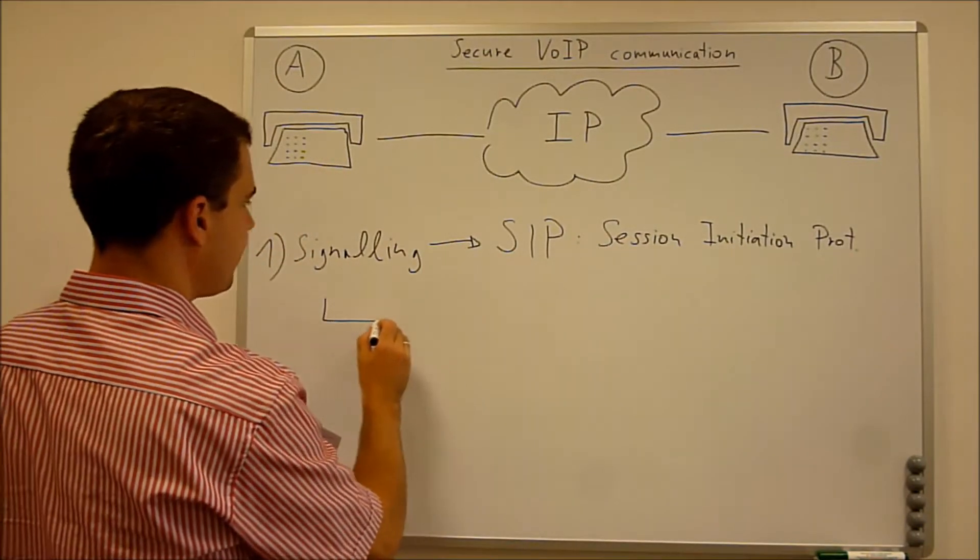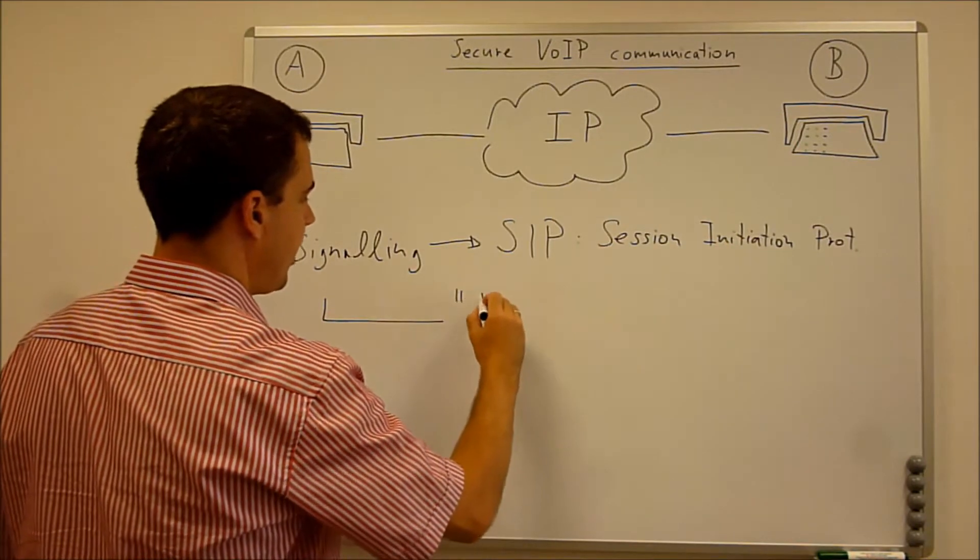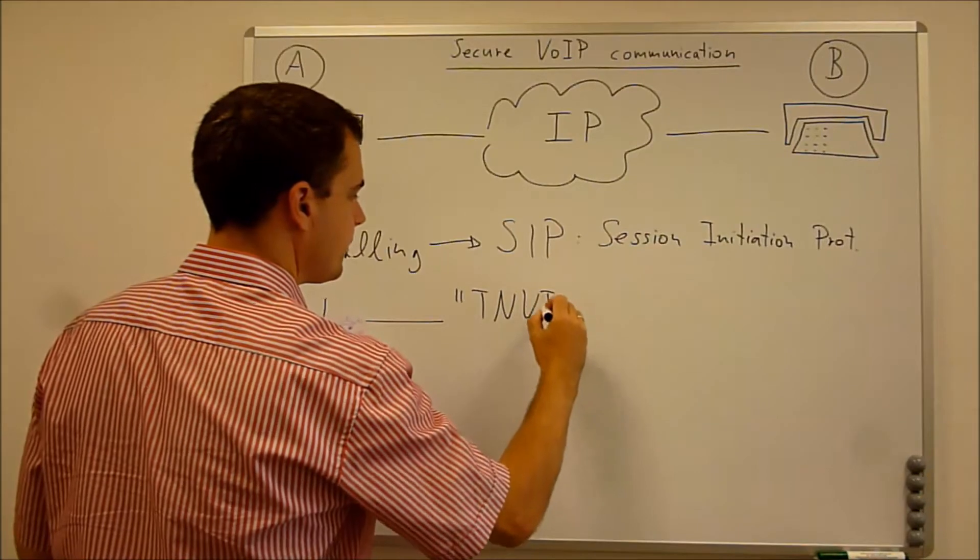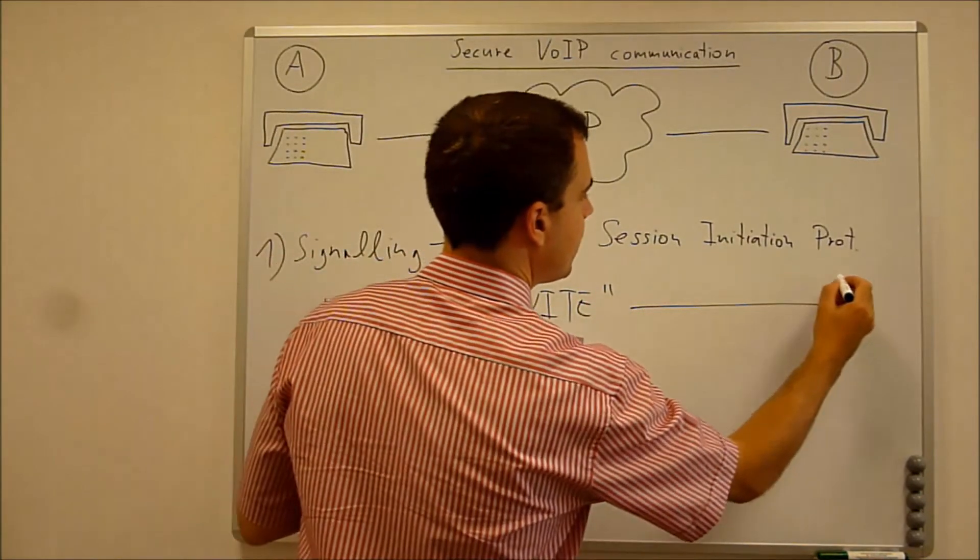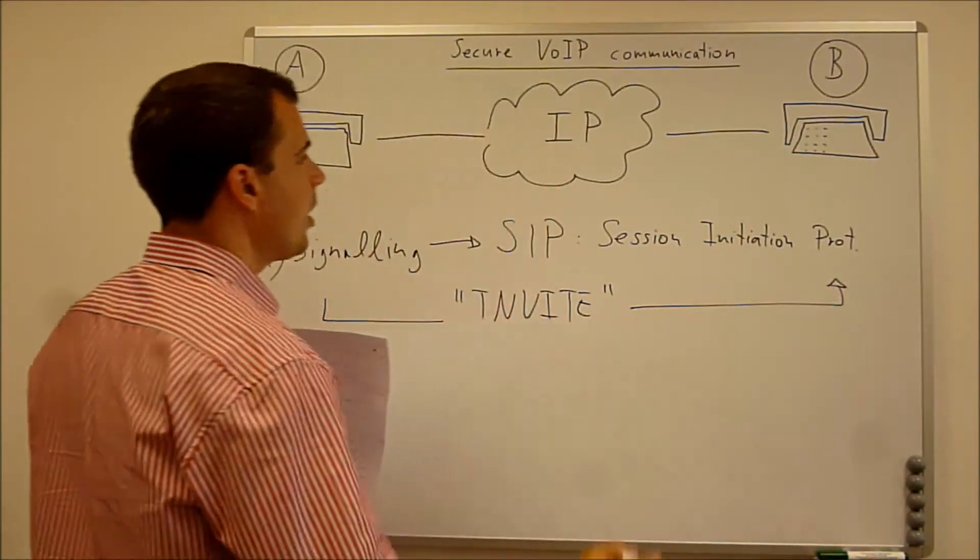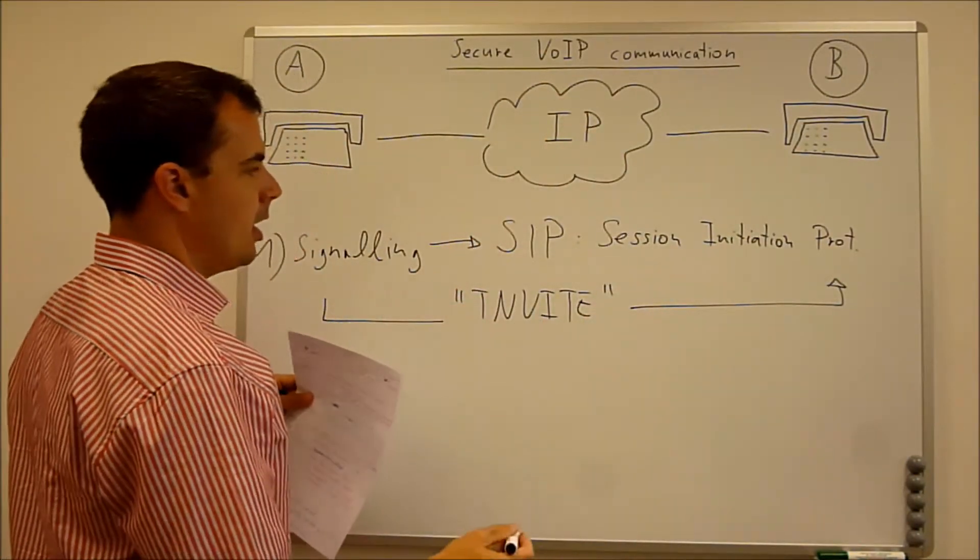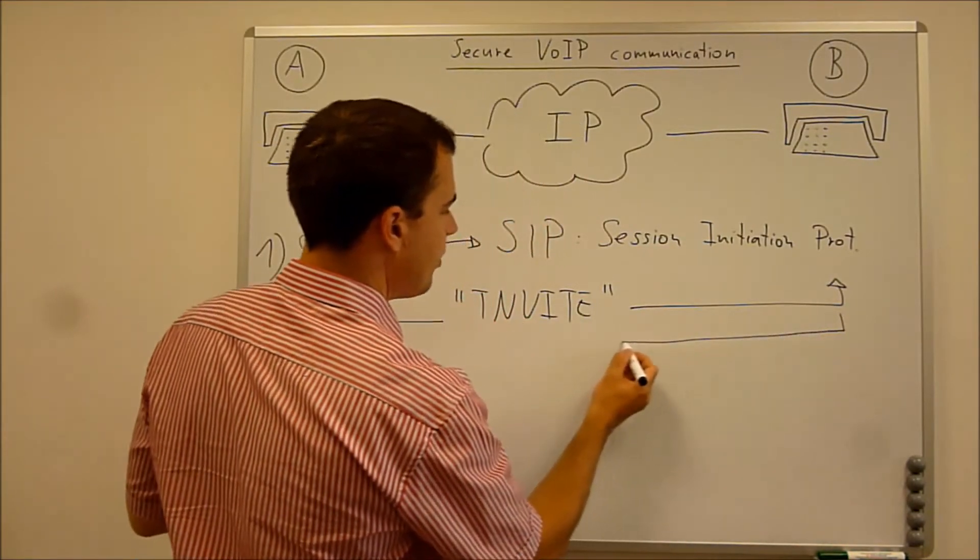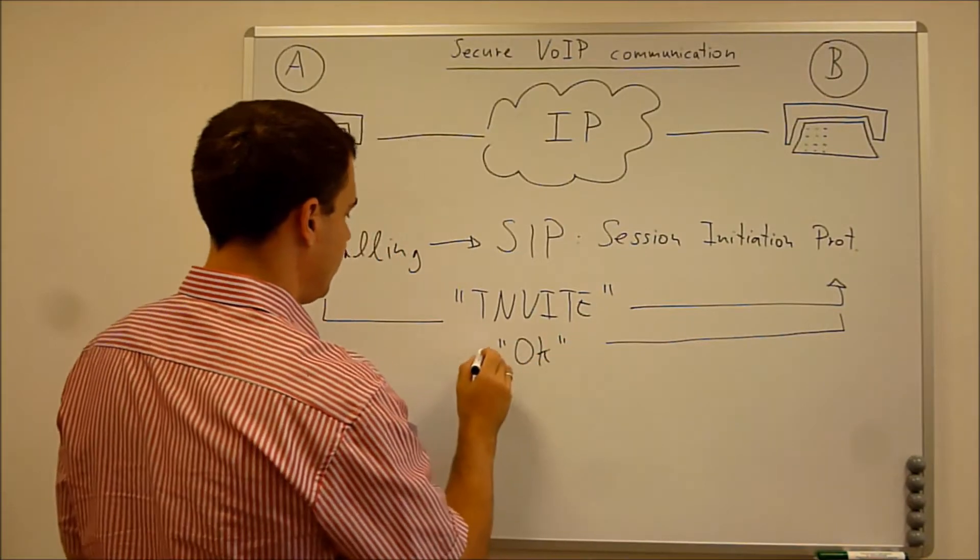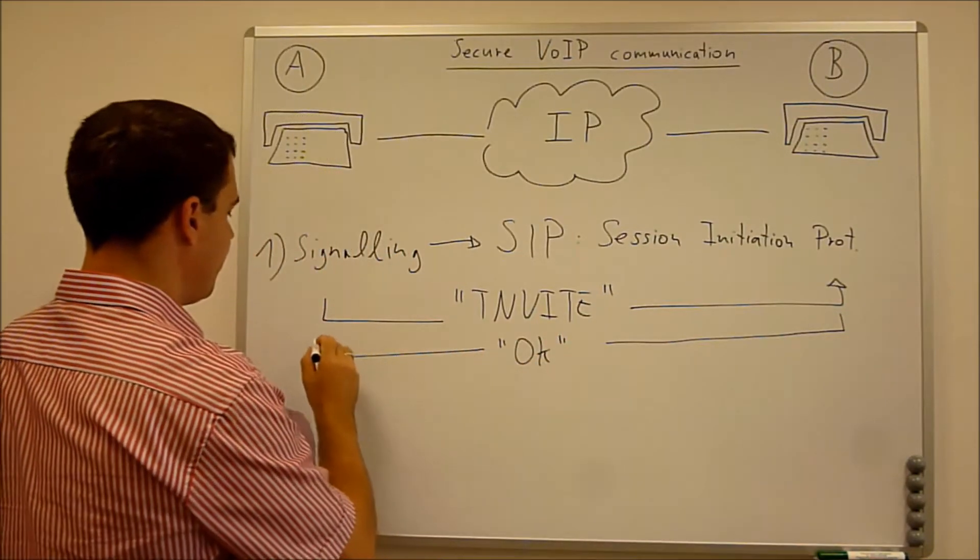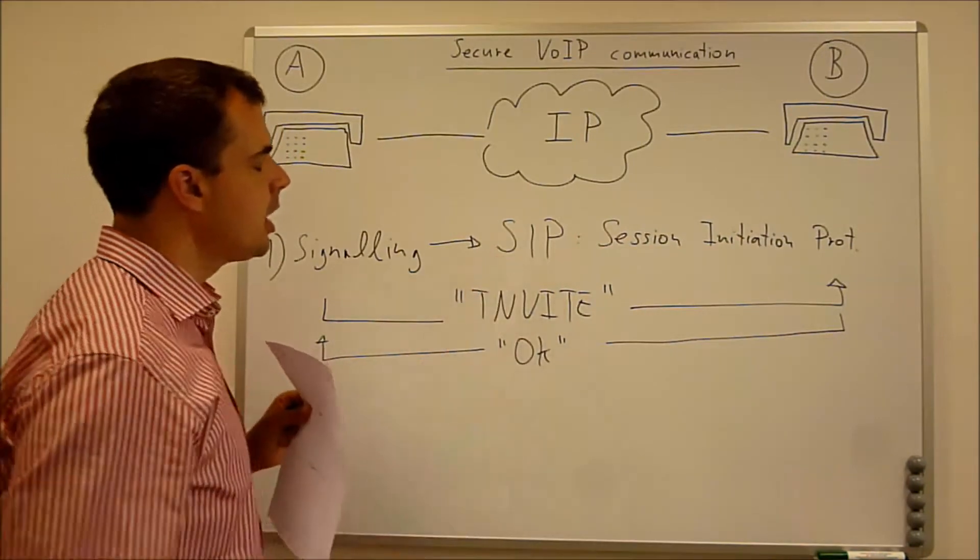there is something like this phone sends an invite to the other phone. Of course, that is also going through your IP infrastructure. And then the other phone will send back another message like OK to establish the call. So there are lots of different text messages exchanged in this protocol.